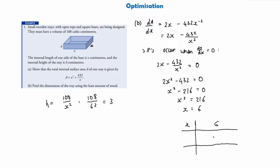To test the nature, we check dA/dx just before and after x = 6. Substituting x = 5.9 into dA/dx gives a negative value, and substituting x = 6.1 gives a positive value. This means the graph goes from negative to positive slope at x = 6, confirming it is a minimum stationary point — which is exactly what we need since we're looking for the least amount of wood.